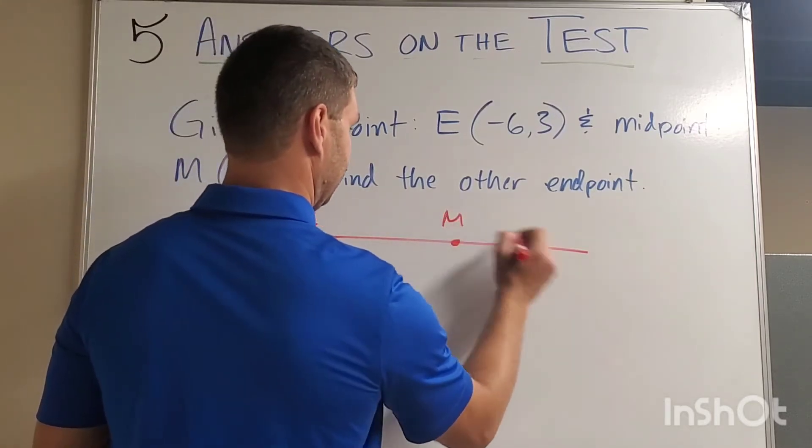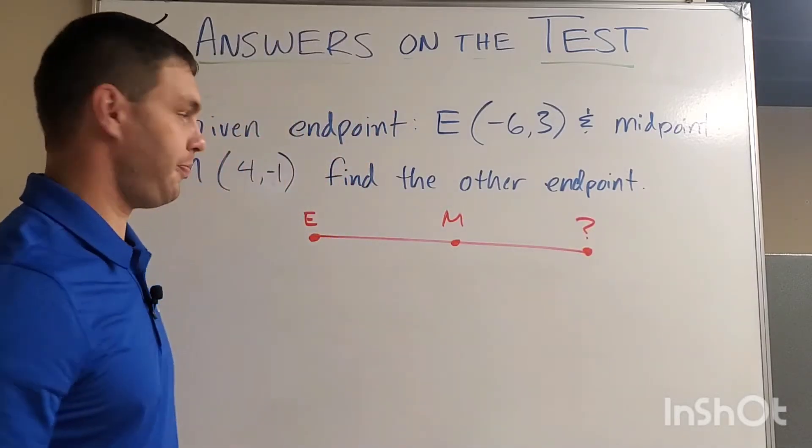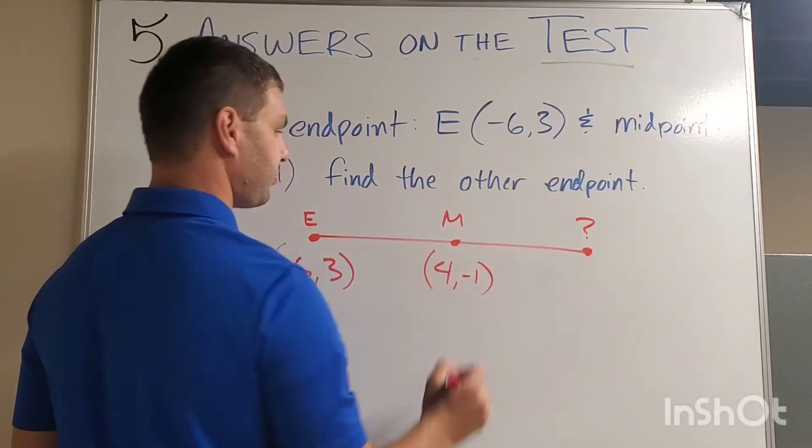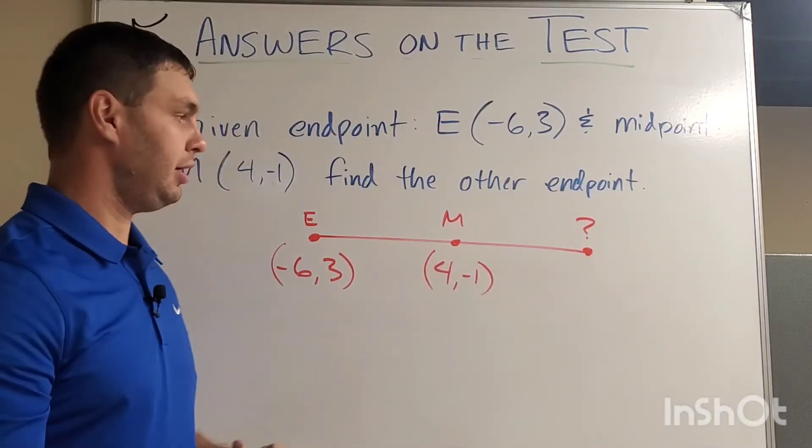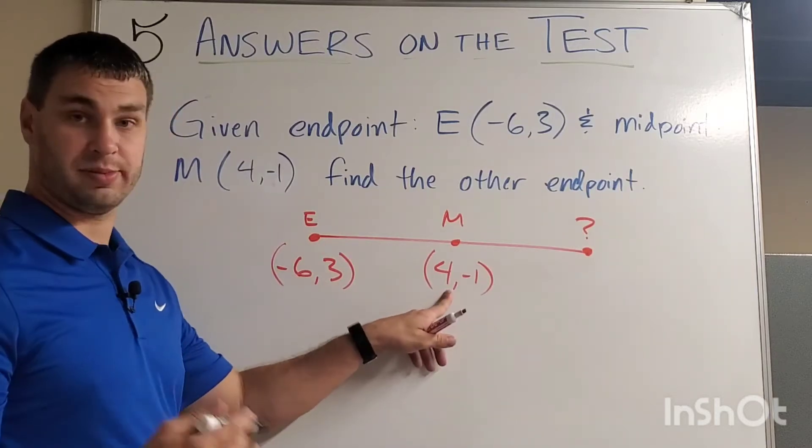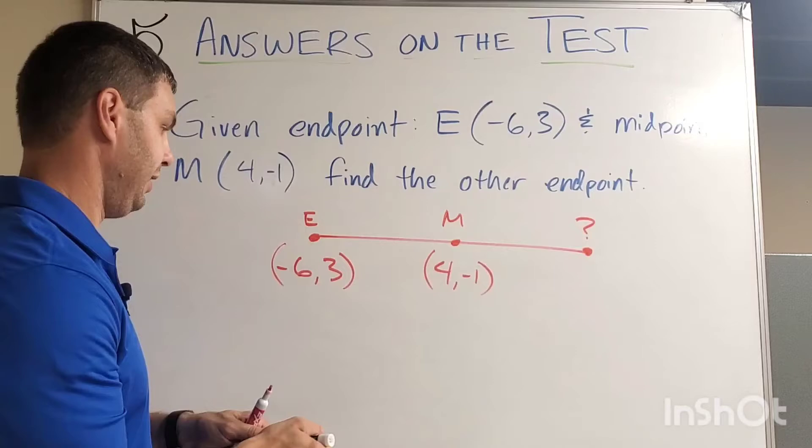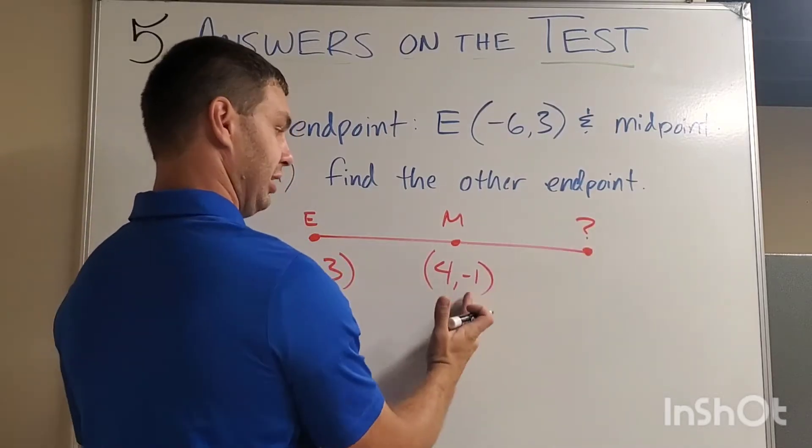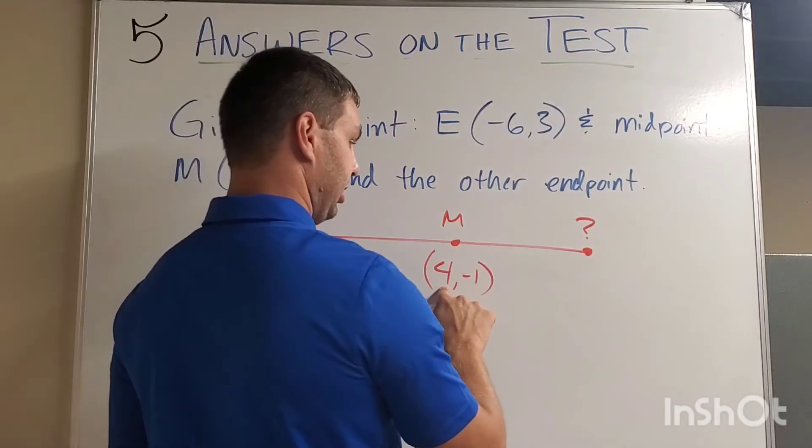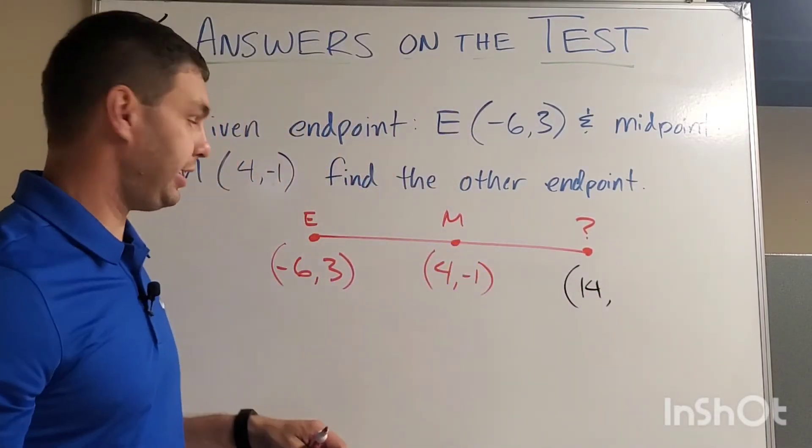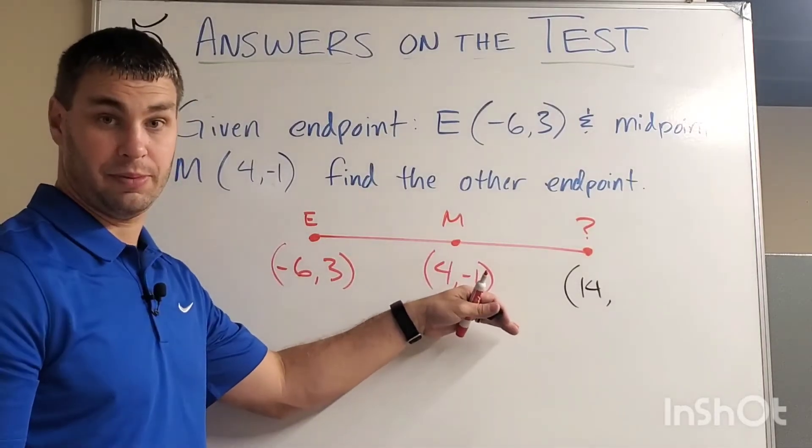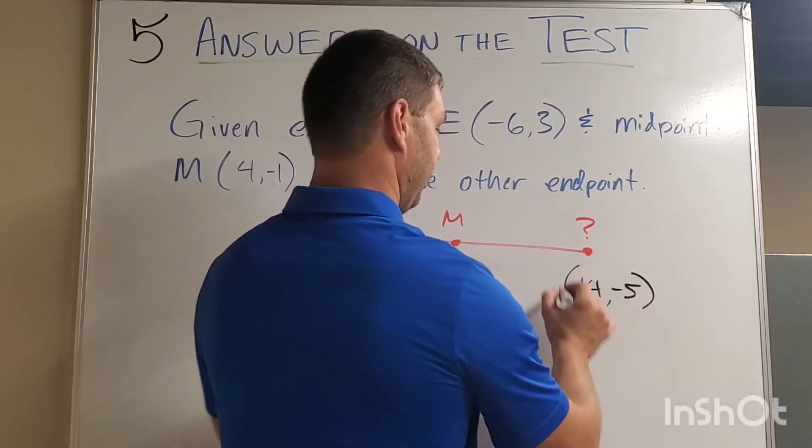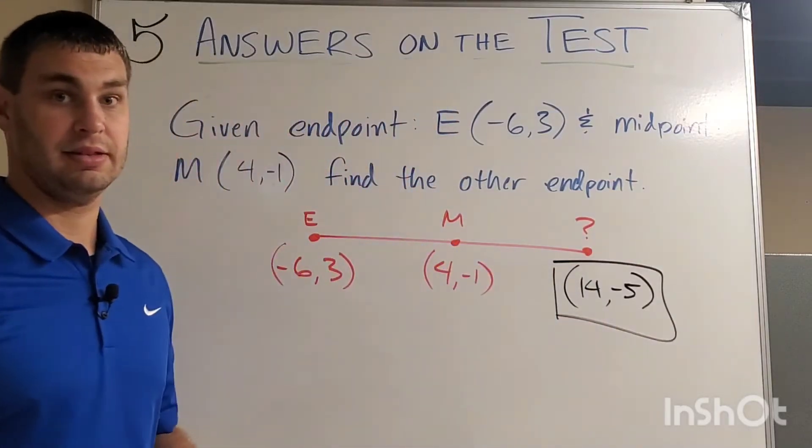Call that E. Call my midpoint M. Then I'm looking to find this one. We'll call it question mark. E is going to be negative six, three. M tells me it's four, negative one. And then I'm looking to figure out what the coordinates of the question mark is. So let's just think about what we did here from negative six to four for my X values. I went up. In fact, I went up 10, right? You can say negative six plus 10 gets you to four. So I have to go up 10 more so that this stays in the middle. It's the midpoint, right? So 10 plus four gets me to 14. Same idea for the Y values from three down to negative one. I went down four. So I have to go down four more in order to keep this in the middle as the midpoint. So down four more from negative one is at negative five. And right here are the coordinates for our other end point.